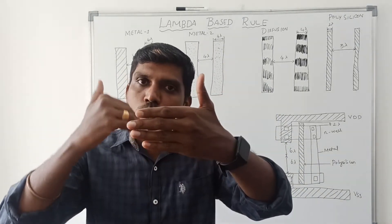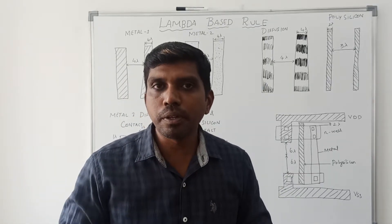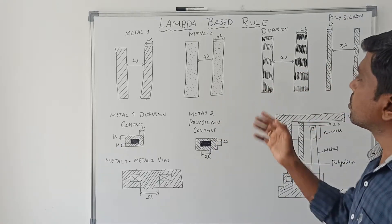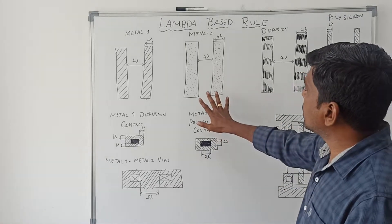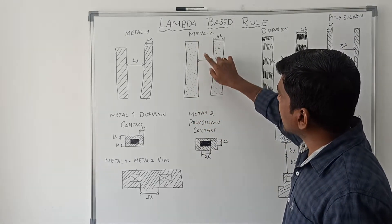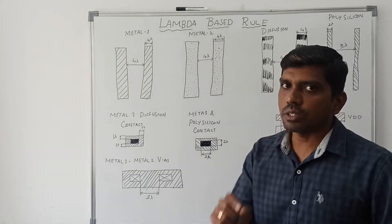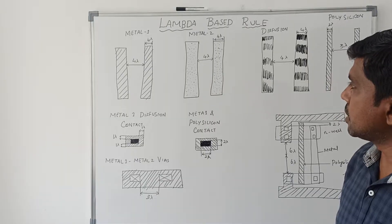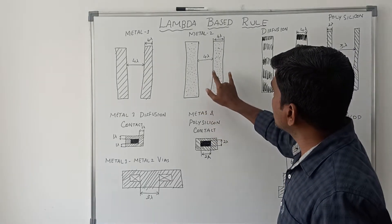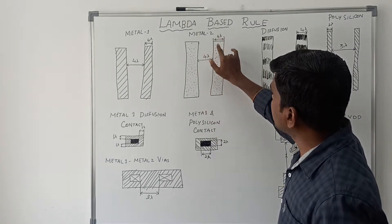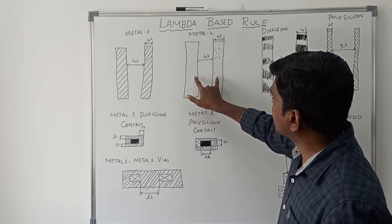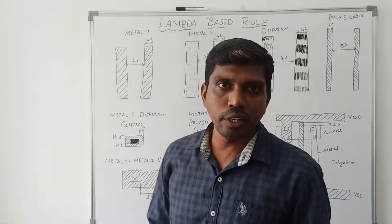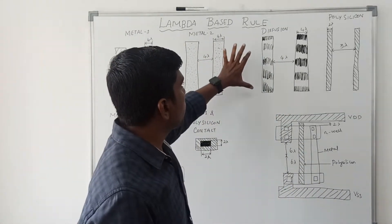The spacing between two metal 1 lines is 4 lambda. Below that value it is not acceptable; more than that value is acceptable. Metal 2 is represented by a rectangular box with dots inside. The minimum width of metal 2 is 4 lambda, and the spacing between two metal 2 lines is also 4 lambda.